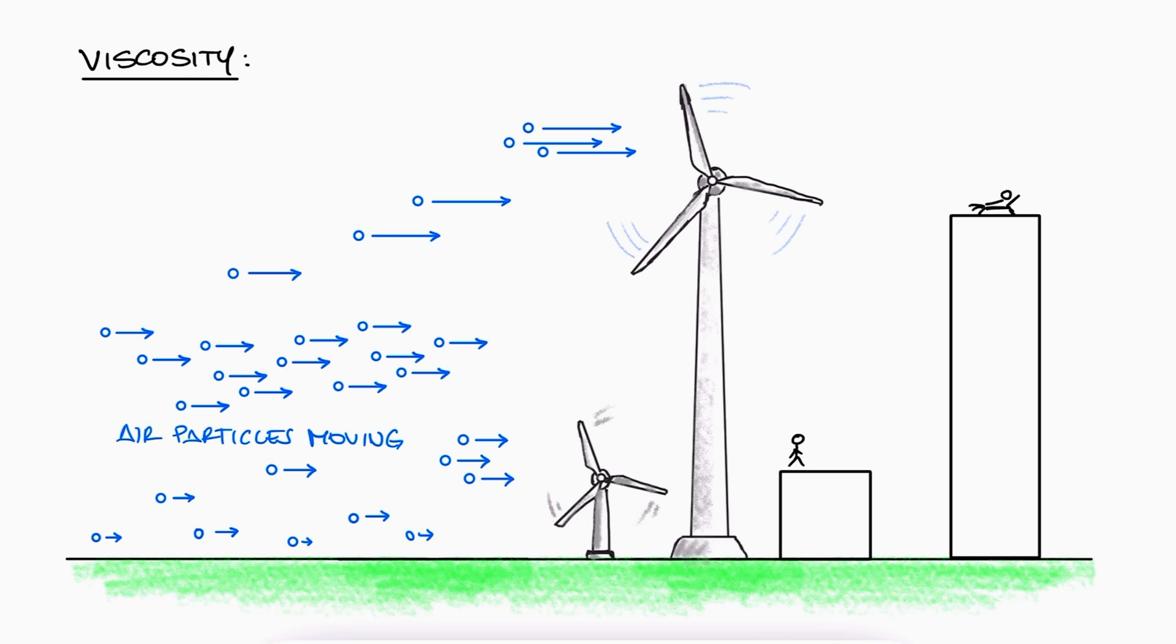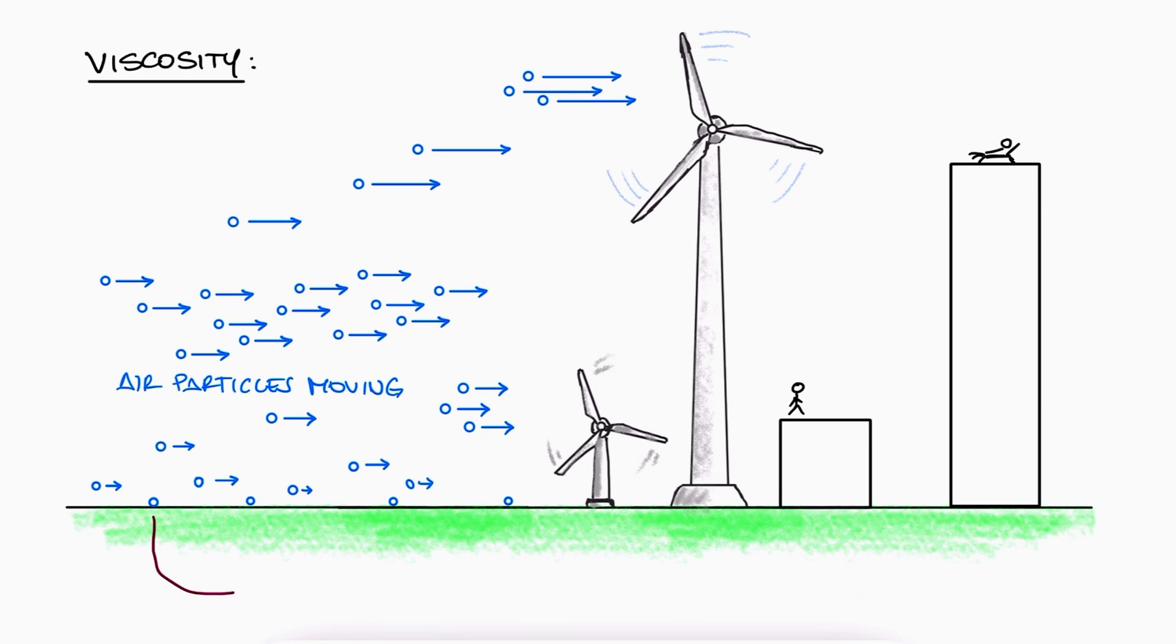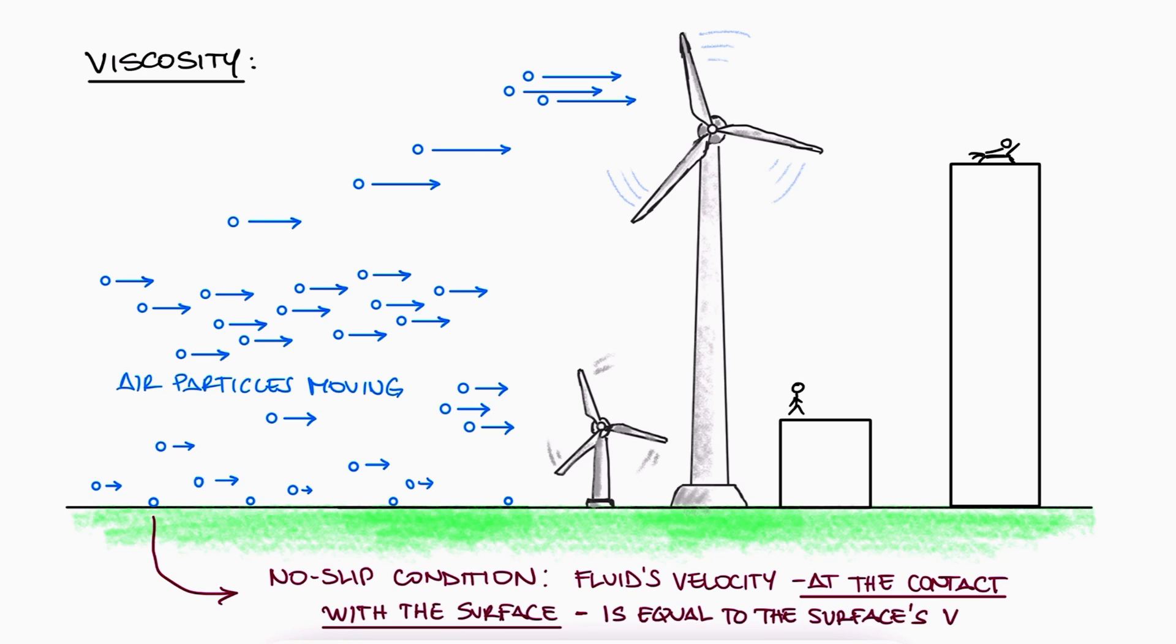So much so that exactly on the surface, the speed of the fluid is exactly zero. This is what's known as the no-slip condition. In general, a fluid that is in contact with a surface will have the velocity of that surface, whether that is zero or not.